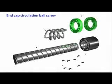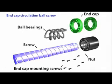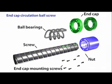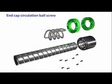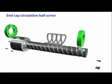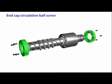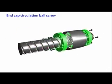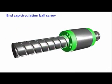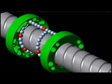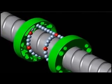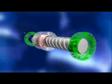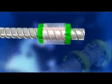End cap circulation ball screws are composed of a screw, nut, ball bearings, and end caps. The bearings remain between the screw and the nut, and the bearings return via a hole made through the end cap and the nut. Because this ball screw design causes the steel bearings to pass through the front and back sections of the nut, it is known as an end cap circulation ball screw.